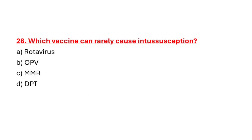Question 28: Which vaccine can rarely cause intussusception? Option A: Rotavirus. Option B: OPV. Option C: MMR. Option D: DPT. Correct answer is Option A: Rotavirus.